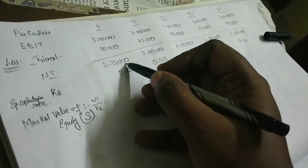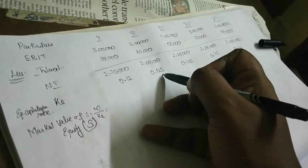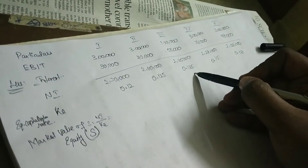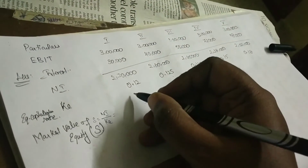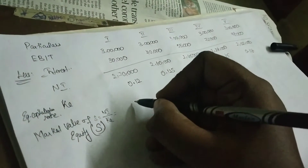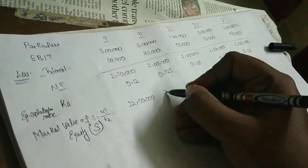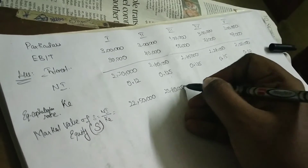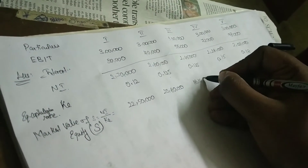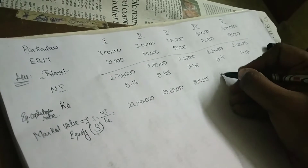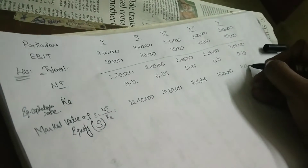Computing market value of equity S = NI ÷ KE: 2,70,000 ÷ 0.12 = Rs. 22,50,000; 2,60,000 ÷ 0.125 = Rs. 20,80,000; 2,45,000 ÷ 0.135 = Rs. 18,14,815; 2,28,000 ÷ 0.15 = Rs. 15,20,000; and 2,02,000 ÷ 0.18 = Rs. 11,22,222.